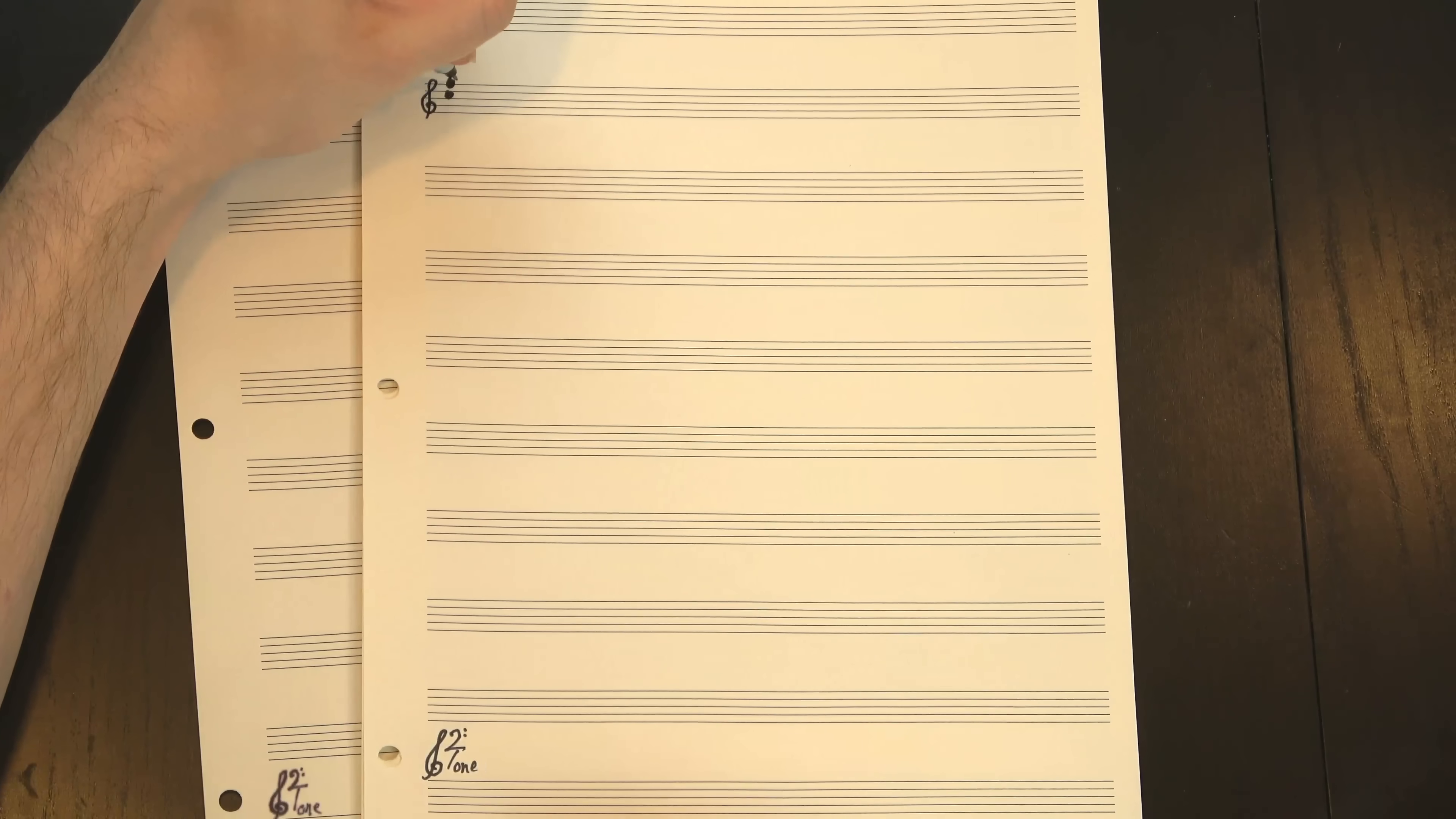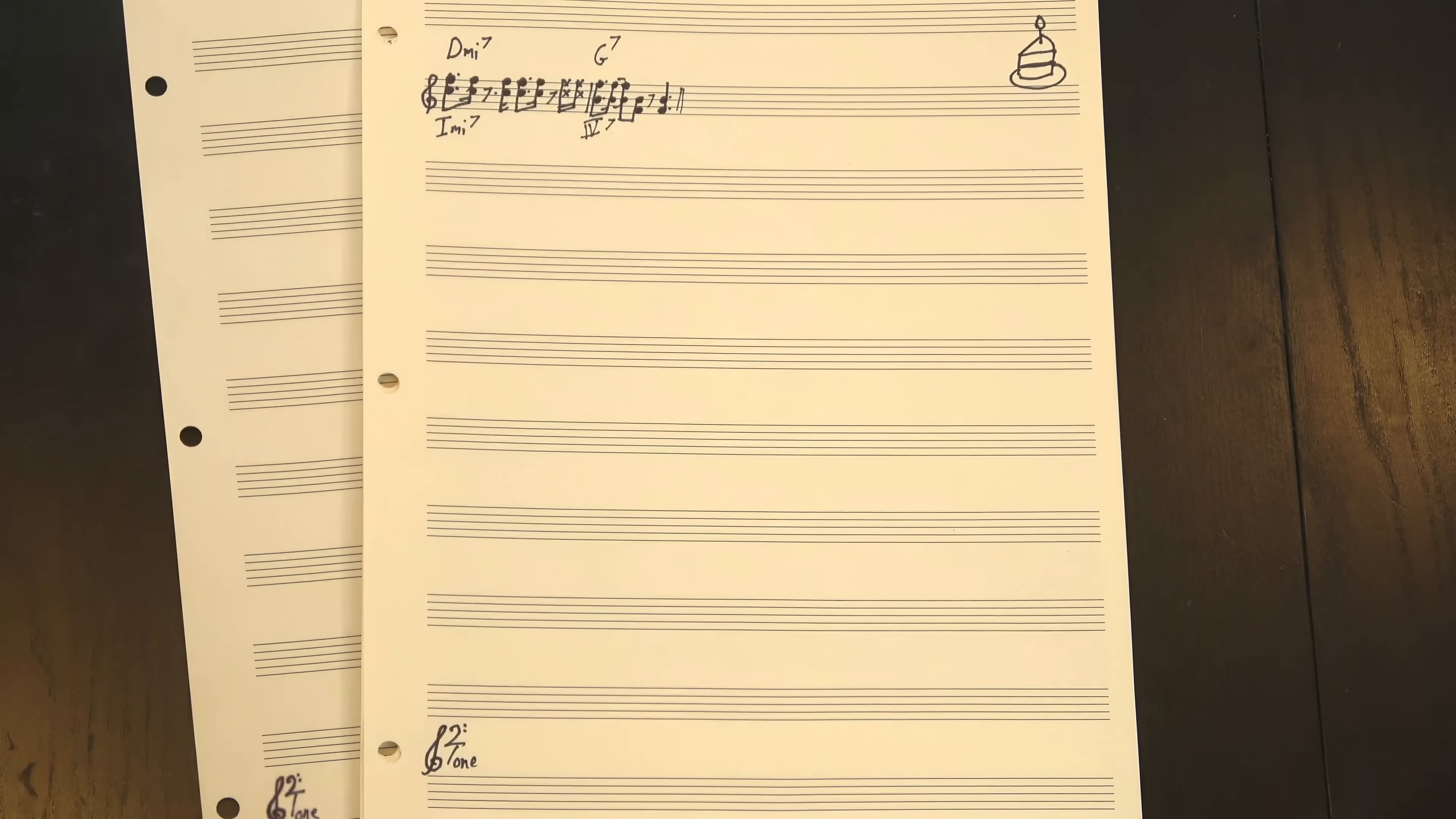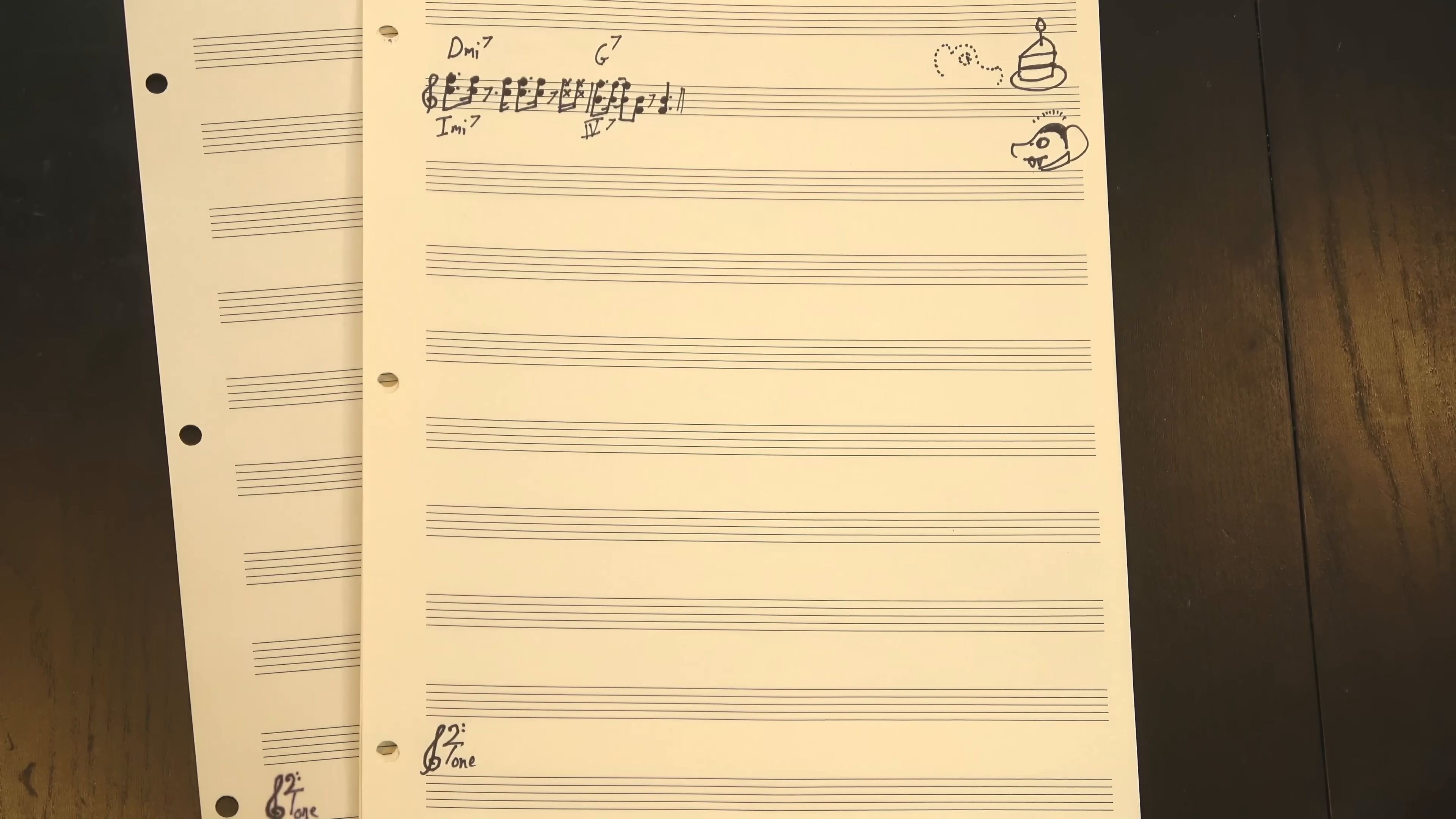After a bit of that, the guitar comes in, and again, the chords are pretty easy. It's I and IV, a pretty classic vamp in a lot of different styles. Or, okay, technically I'm not actually hearing D or G in these chord voicings.